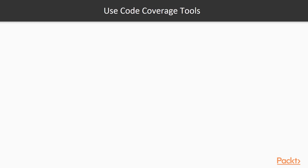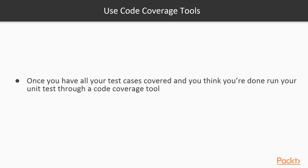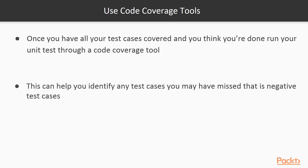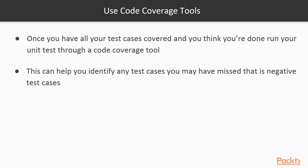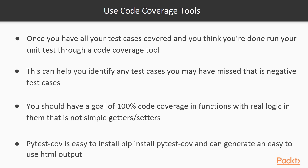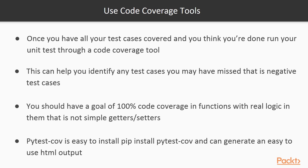Use code coverage analysis tools. Once you've implemented all your test cases, go back and run your unit tests through a code coverage tool. It can be surprising some of the areas of your code you'll miss, especially negative test cases. You should have a goal of 100% code coverage on functions with real logic. Don't waste your time on one-line getter and setter functions. pytest-cov is easy to install with pip install pytest-cov, and it can generate an easy-to-use HTML output.